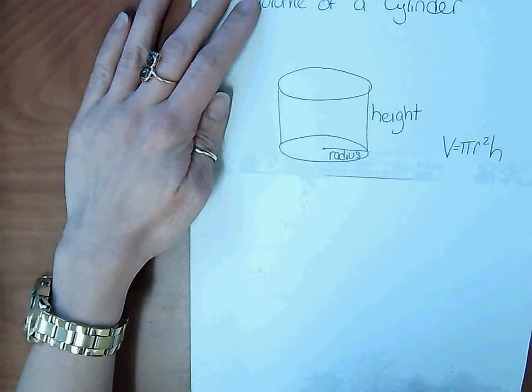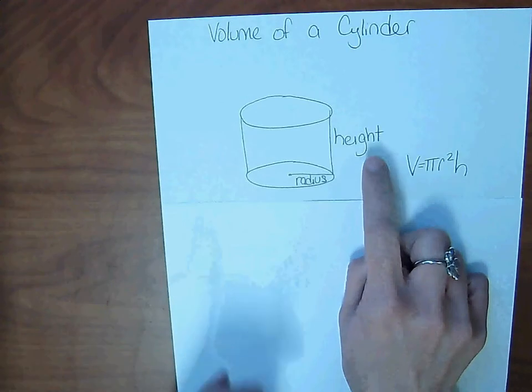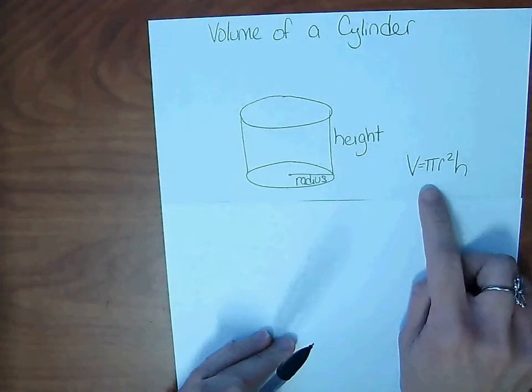So remember the parts of a circle and a cylinder. In a circle, we have the radius and the height of the cylinder. So again, the formula, volume equals pi r squared h.